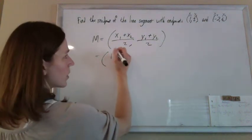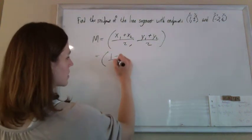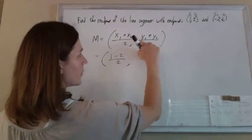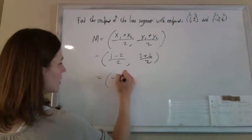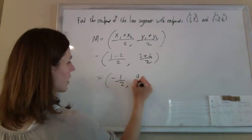Add the x's. 1 plus a negative 2, so just 1 minus 2 over 2, comma 3 plus 6 over 2. So this is going to be negative 1 half and 9 half.